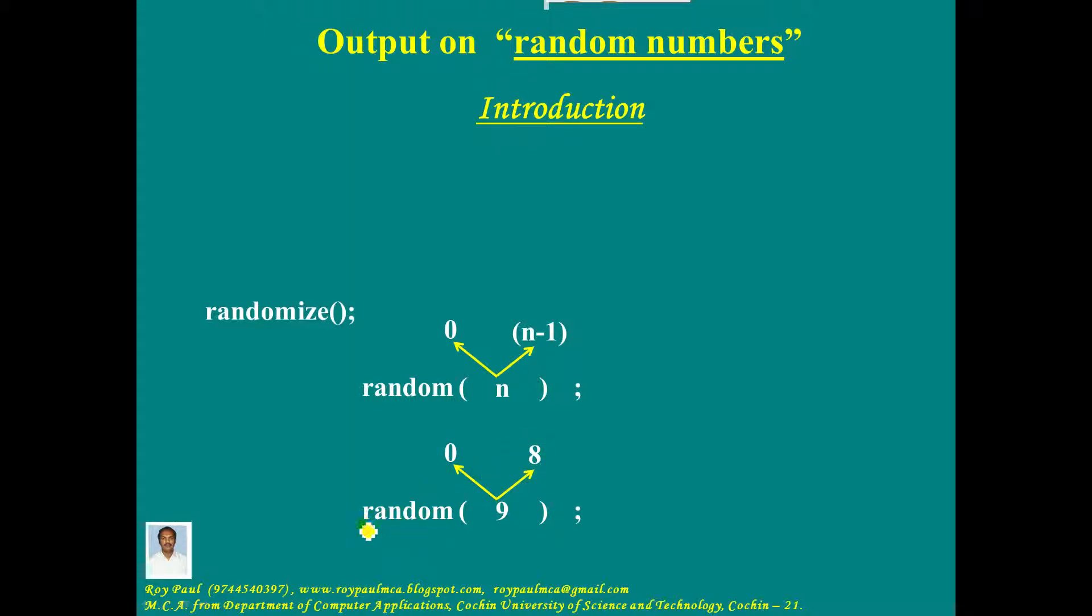For the proper working of random function, first we should call the function randomize, and only after that we should call the random function. In a program, without calling the randomize function, if you call the random function, there is a chance that always the same number may occur. So, the generated number cannot be truly random.